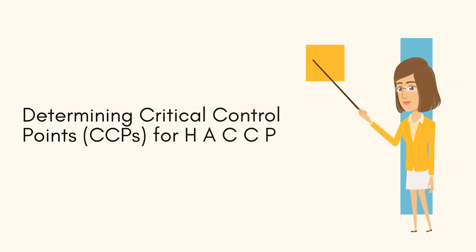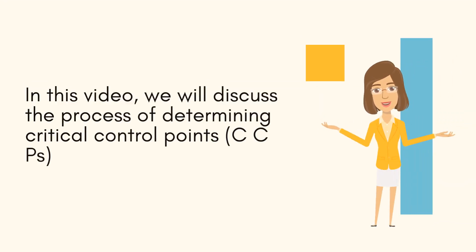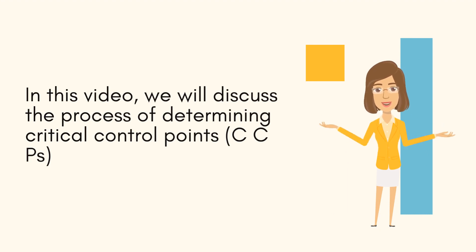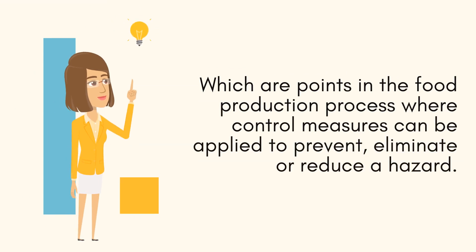In this video, we will discuss the process of determining critical control points, which are points in the food production process where control measures can be applied to prevent, eliminate, or reduce a hazard.